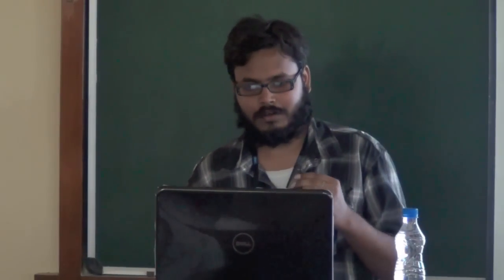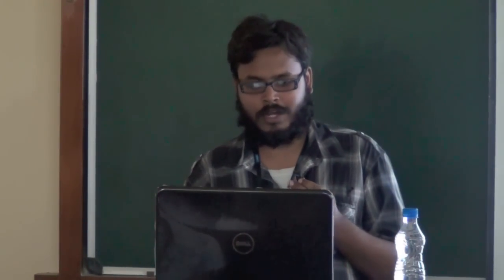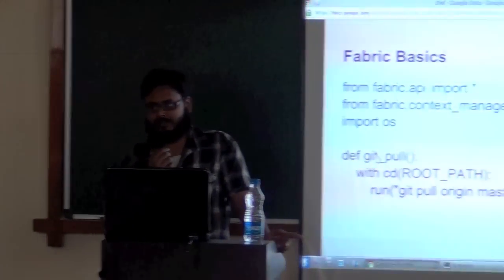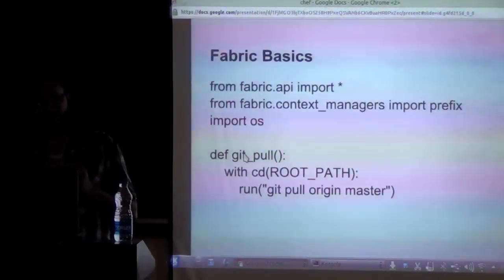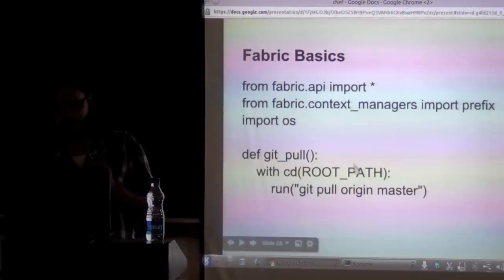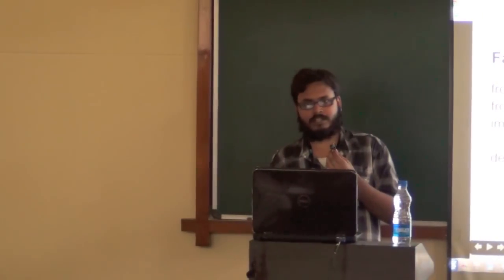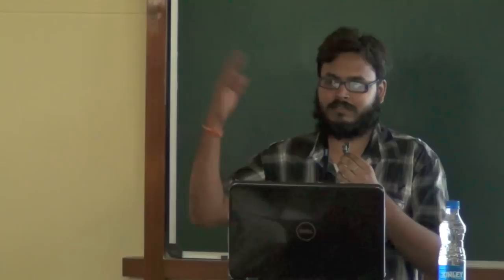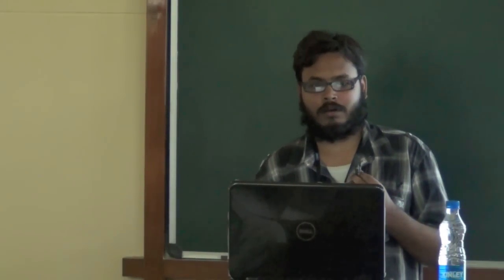A small Fabric example: you generally keep your source code in a GitHub repo. I wrote a function that pulls my source code from the repo to my server. With 'cd root_path' — where root_path is a constant for your project root — you run 'git pull origin master'. When you do 'fab gitpull', it does the things for you. You don't need to go to the server or log in to the server — you can do these things locally.